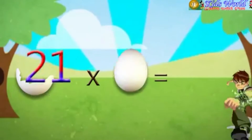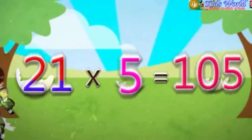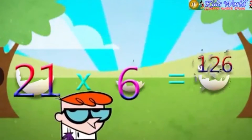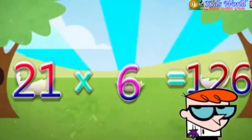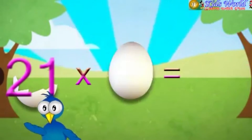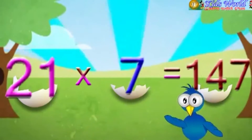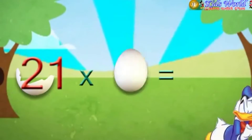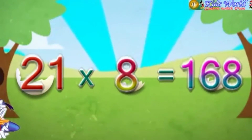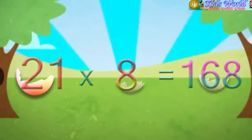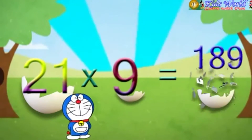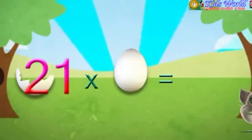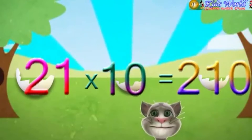21 into 5 is equal to 105. 21 into 6 is equal to 126. 21 into 7 is equal to 147. 21 into 8 is equal to 168. 21 into 9 is equal to 189. 21 into 10 is equal to 210.